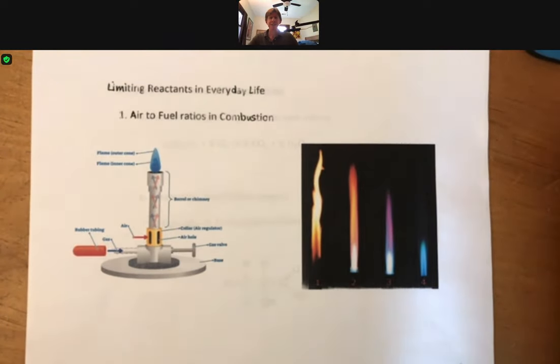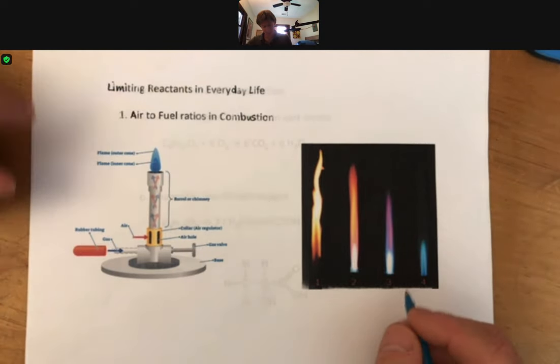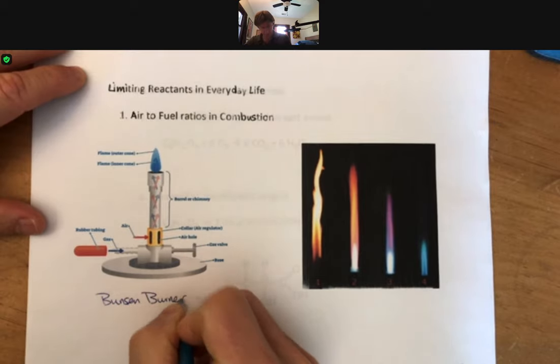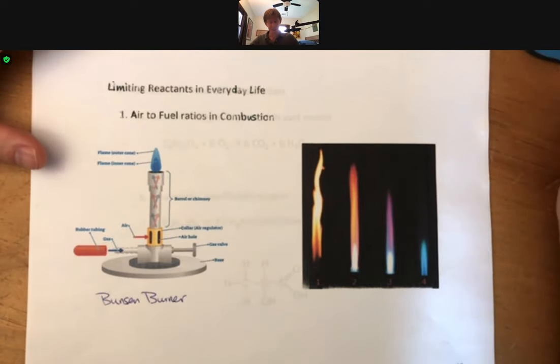Now let's talk about limiting reactants in everyday life. The first example I'd like to give is air to fuel ratios in combustion. What I'm showing here on the left is what's commonly called a Bunsen burner, something that you should get to use in your general chemistry classes.